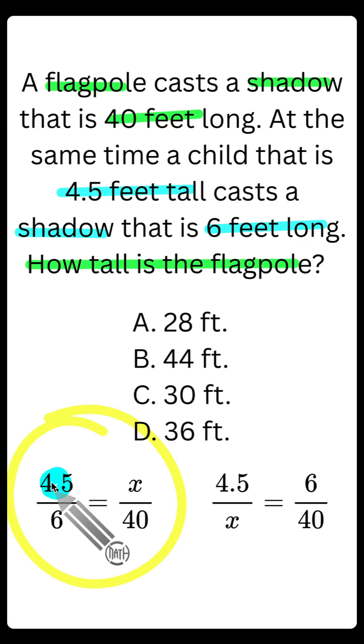Notice that the 4.5 is the child's height, as we can see in the problem, and the 6 is the child's shadow. So we have child height over child shadow. What does this x represent? That represents the flagpole's height that we're trying to find over the flagpole's shadow. So listen to this again. Child height over child shadow equals flagpole height over flagpole shadow. We have child on the left, flagpole on the right.